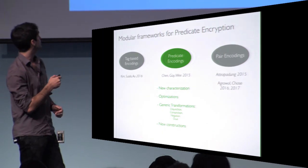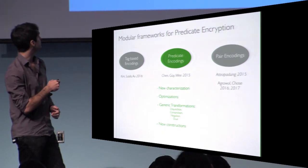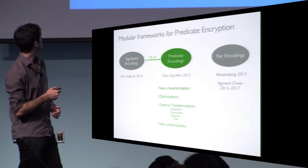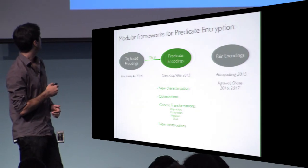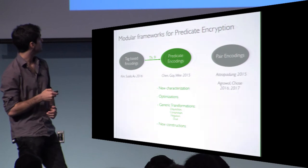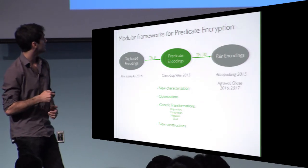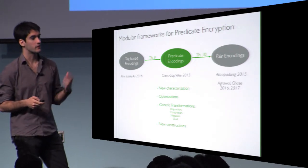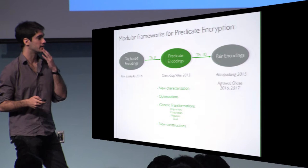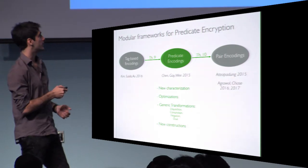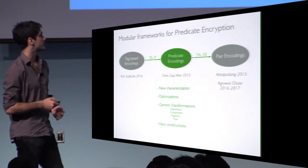We also investigate the relation between these primitives. We show how to transform tag-based encodings into predicate encodings and predicate encodings into pair encodings, thereby formalizing the folklore idea that pair encodings are more expressive.